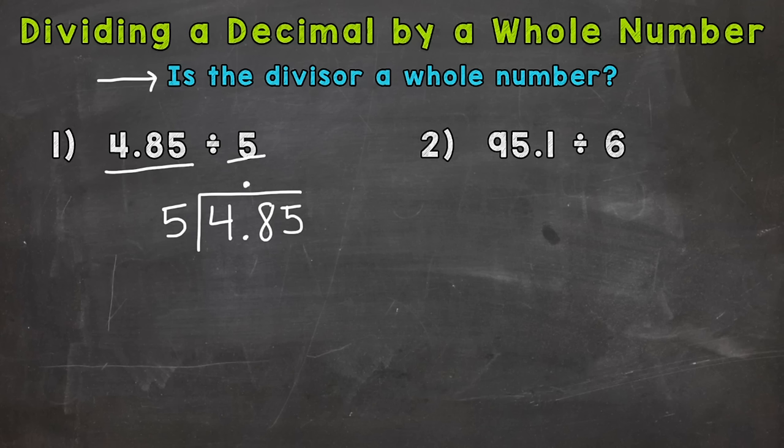That's where it's going to go in the answer. And in the case of this video, our divisors are going to be whole. So we can bring that decimal straight up. Once you do that, you just go through the division steps like any other long division problem. Divide, multiply, subtract, bring down, and repeat.